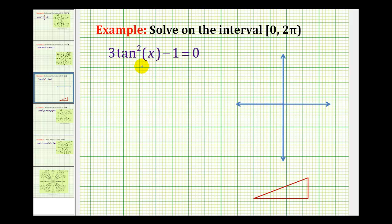We want to solve the trig equation 3 tangent squared x minus 1 equals 0 on the interval from zero to 2π, where it's closed on zero and open on 2π.